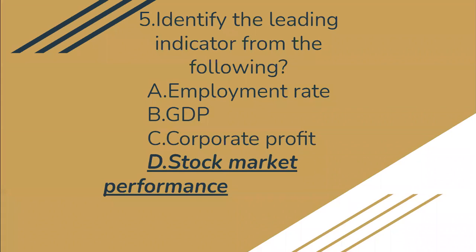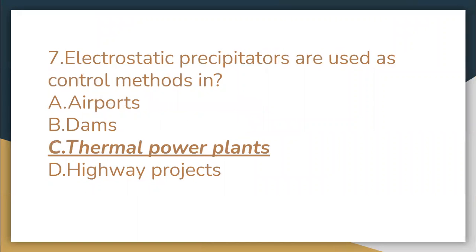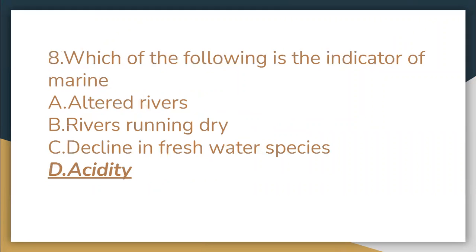Identify the leading indicator from the following — Stock market performance. The first aspect decision makers look for in a quick decision is the executive summary. Electrostatic precipitators are used as control methods in thermal power plants.